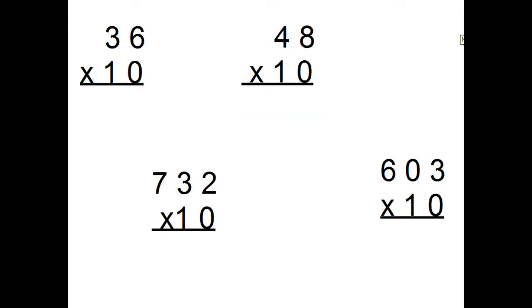Let's go to a little bit bigger problems. 36 times 10, bring my 36 down, add a zero to the end. 36 times 10 equals 360. 48 times 10, bring down my 48 and add a zero to the end, 480.